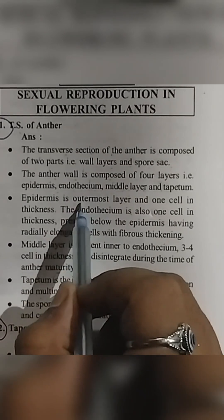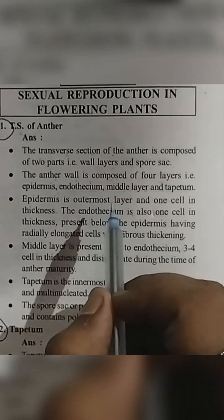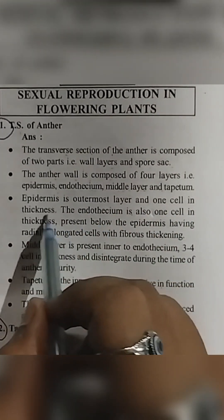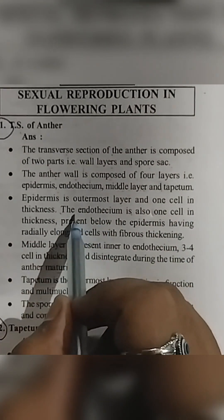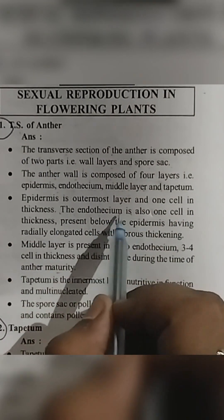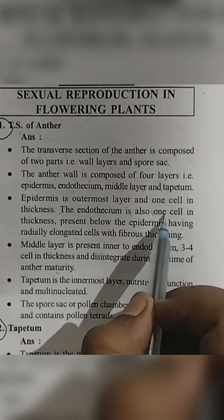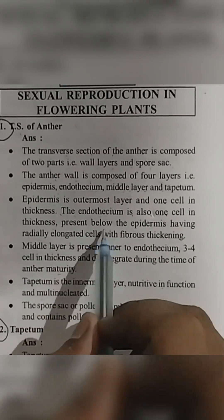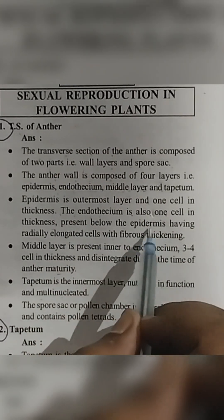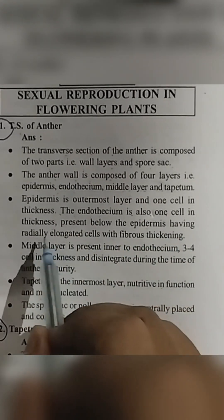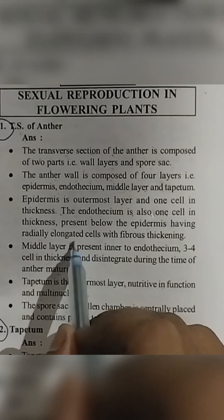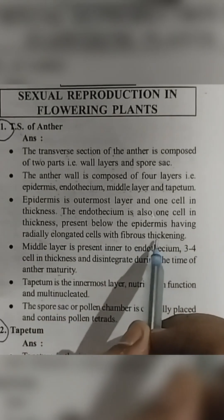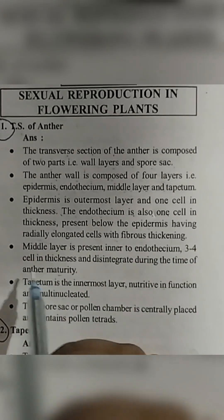The epidermis is the outermost layer and one cell in thickness. The endothesium is also one cell in thickness, present below the epidermis, and has radially elongated cells with fibrous thickening.